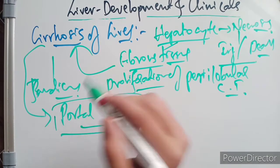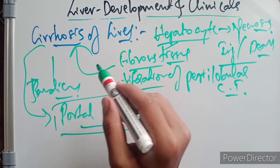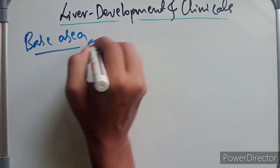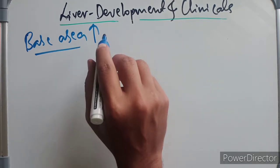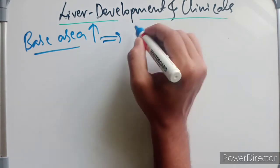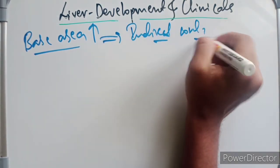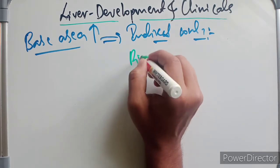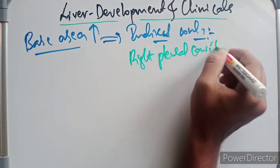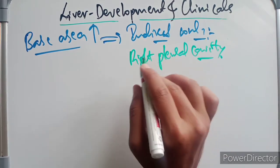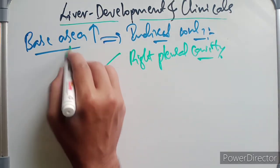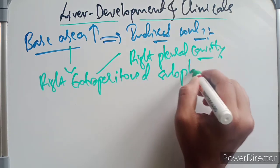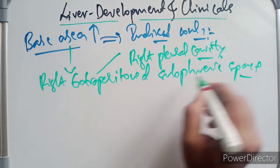Now, the surgical importance of the bare area of the liver. The bare area of the liver is in indirect contact with the diaphragm, which separates it from the right pleural cavity.